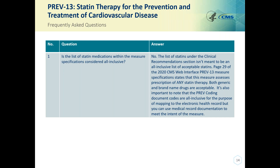Frequently asked questions for PREV-13: Question one — is the list of statin medications within the measure specification considered all-inclusive? The answer is no. The list of statins under the clinical recommendations isn't meant to be an all-inclusive list. There's guidance within the measure specification that states prescription of any statin therapy is acceptable. Both generic and brand name drugs are acceptable. It's important to note that the PREV coding document codes are all-inclusive for purposes of mapping to an electronic health record, but you can use medical record documentation to meet the intent of the measure.